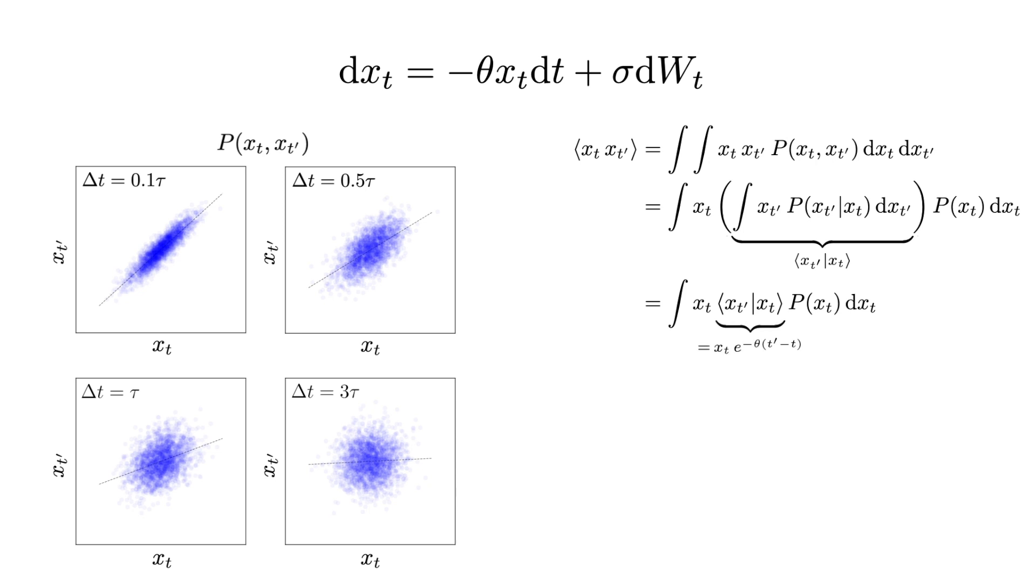Substituting and taking the exponential out, we are left with the second moment of xt, which is simply the variance.